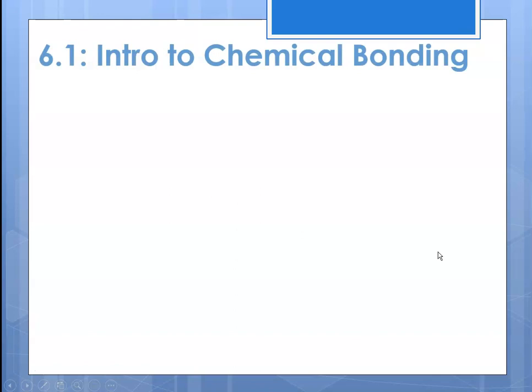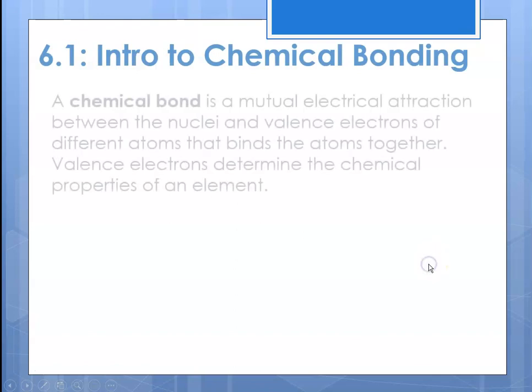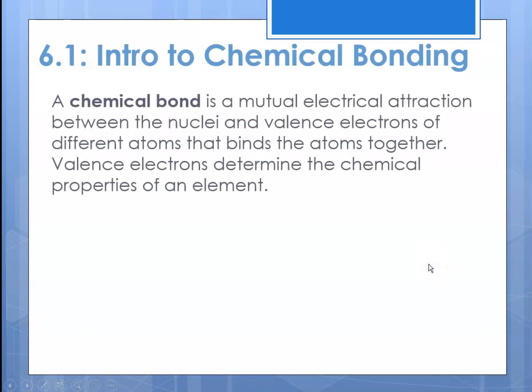First off, let's introduce ourselves to chemical bonding. What is a chemical bond? It's the mutual attraction between the nuclei and valence electrons of different atoms that binds the atoms together. When we say valence electrons, we're talking about the outermost electrons. Valence electrons determine the chemical properties of an element.